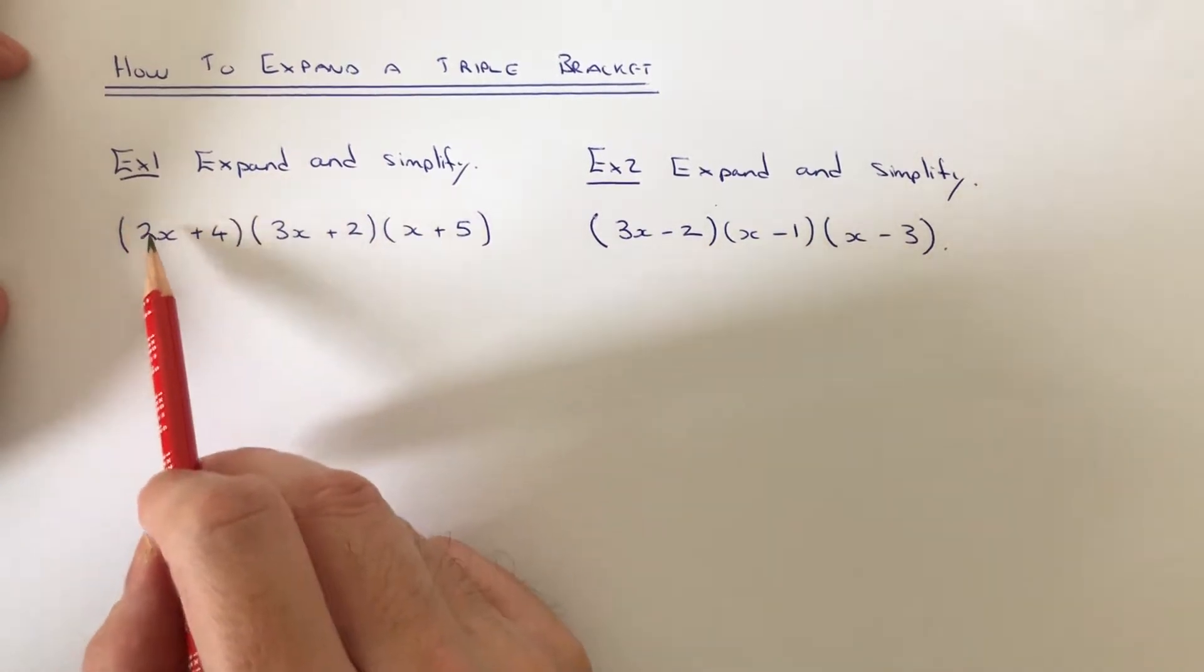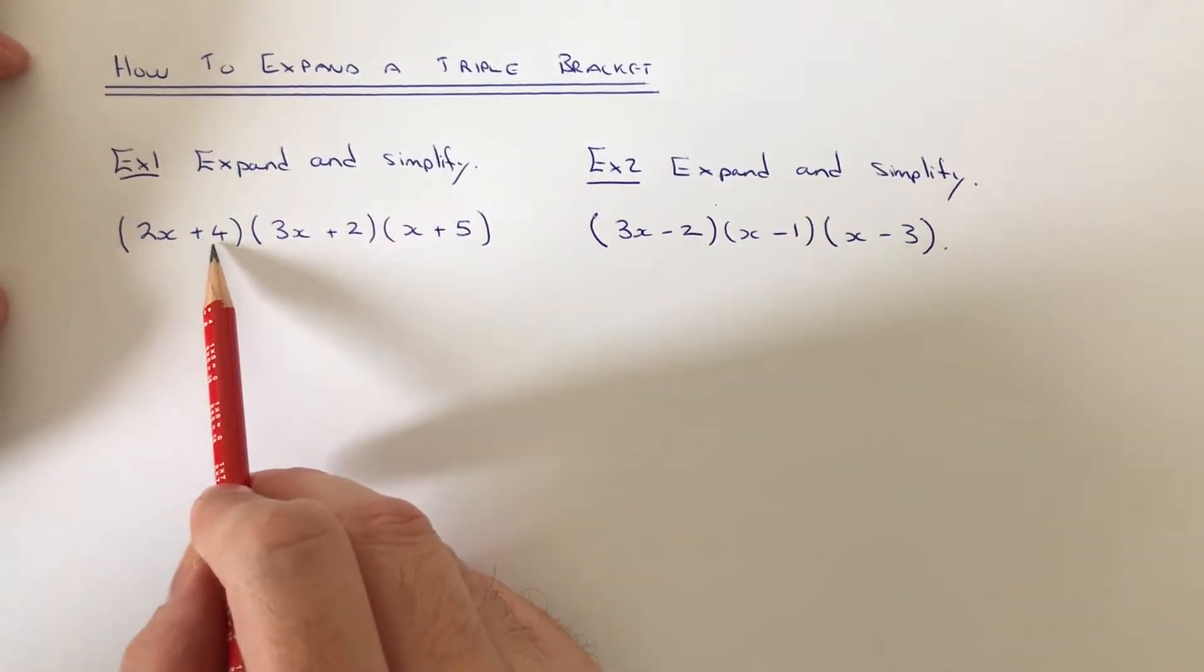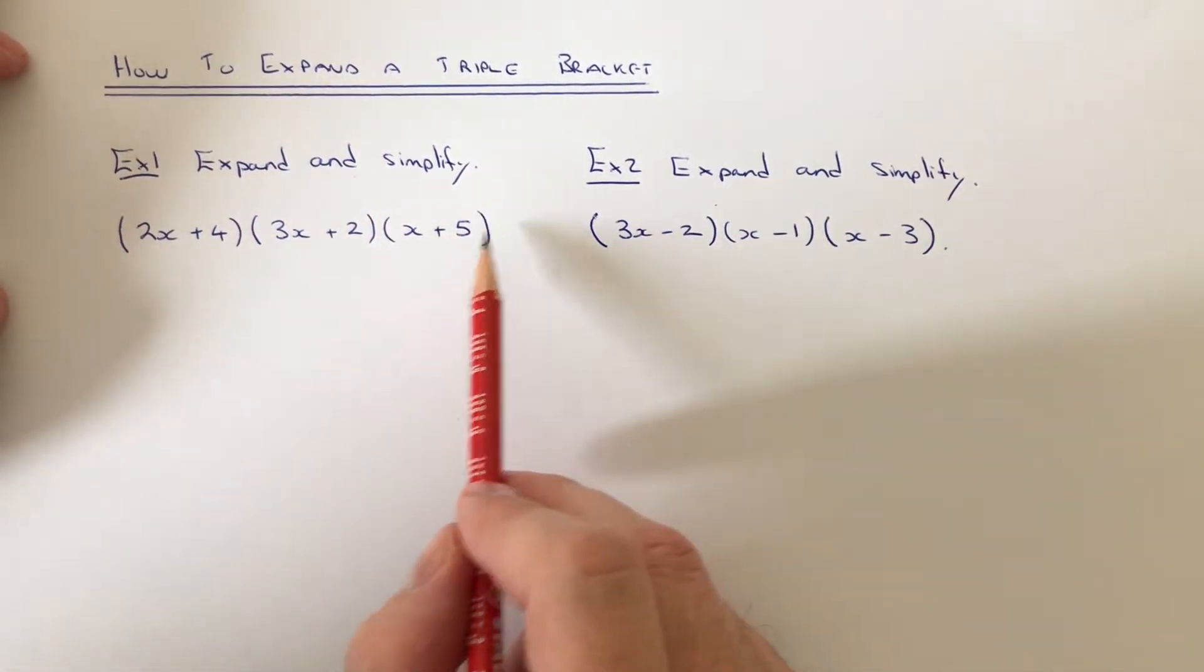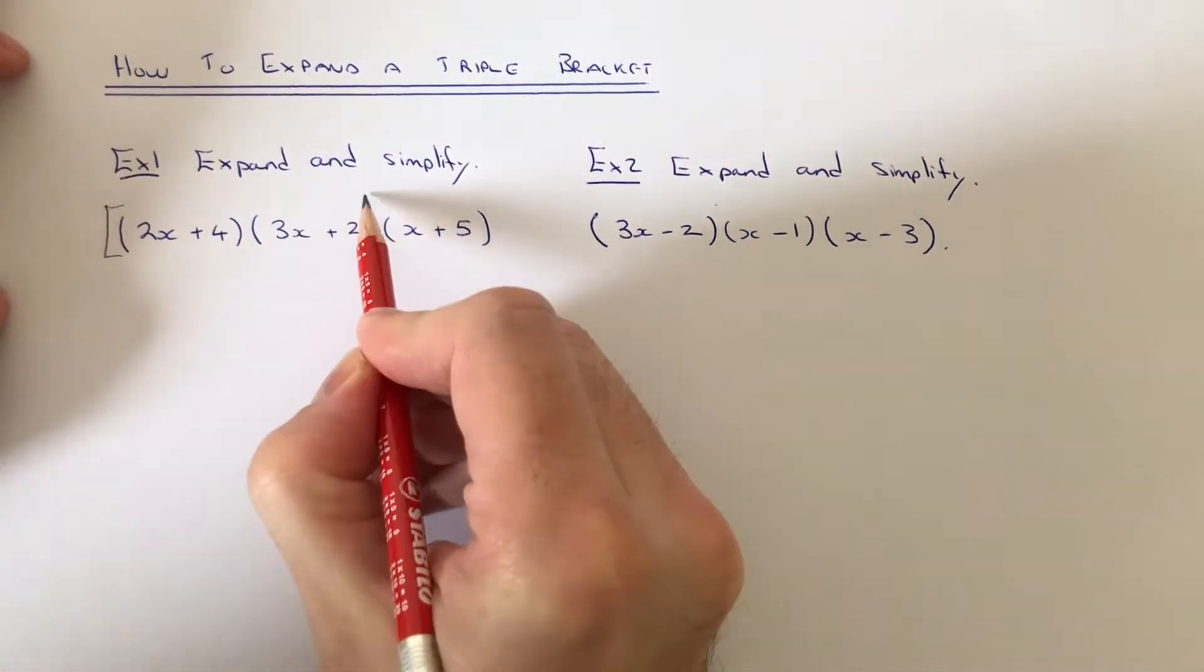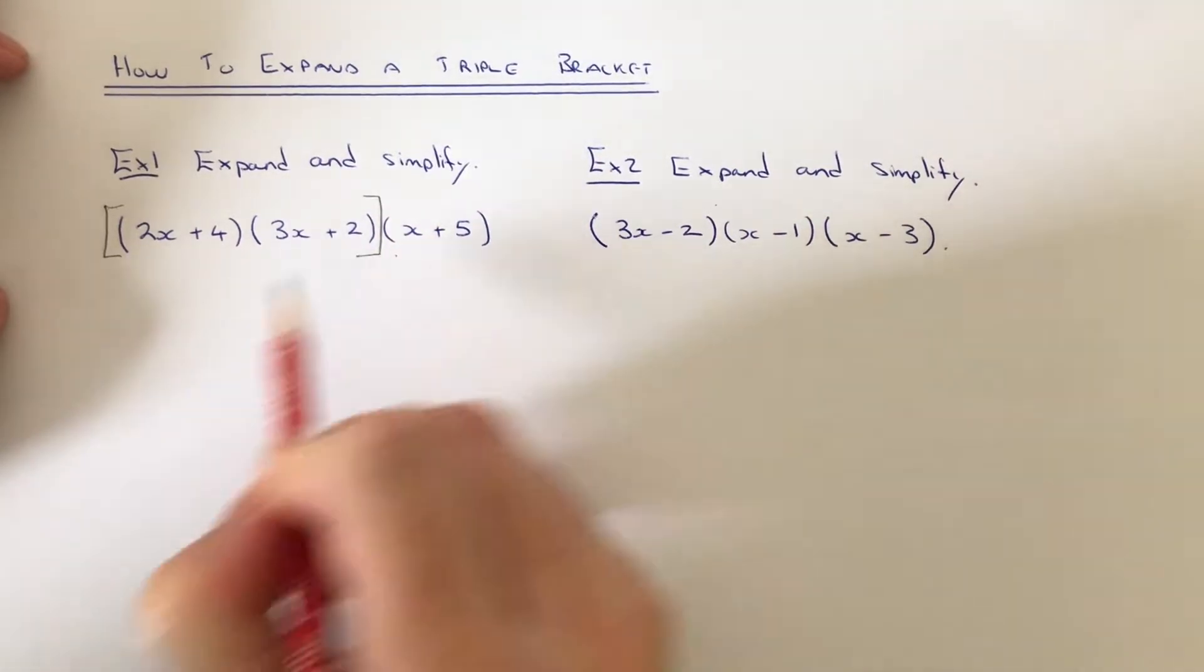So, let's have a look at an example. We've got expand and simplify 2x plus 4, 3x plus 2, and x plus 5. To begin with, we need to multiply out the first two brackets.